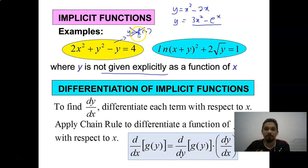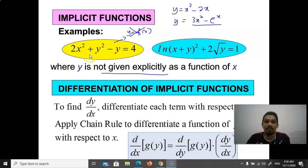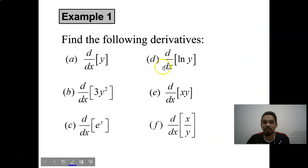So this is an implicit function, and because of that we call it implicit differentiation. To find dy/dx, we differentiate each term with respect to x, and we apply the chain rule to differentiate the function of y with respect to x.